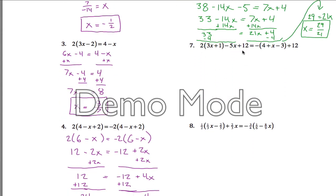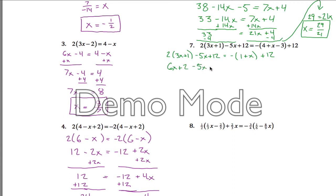Moving on, number 7 here — same kind of idea. We've got lots of parentheses we'll want to get rid of, but our first step will be to look for like terms. We don't have any on the left here, but on the right we do: we have a 4 and a minus 3, so those give us just positive 1. We can distribute — we've got this 2 that we can distribute in, and that gives us 6x plus 2, minus 5x plus 12 on the left. And we've got this negative sign we can distribute in, which gives us negative 1 minus x plus 12. Now let's collect like terms: we've got 6x and a minus 5x, so that just leaves us 1x. And then we've got 2 and 12, which gives us 14. And then on the right we've got a minus 1x, and then negative 1 and positive 12, which gives us 11.